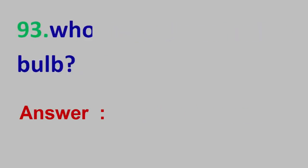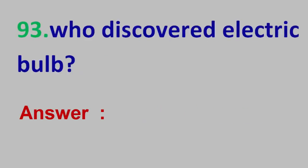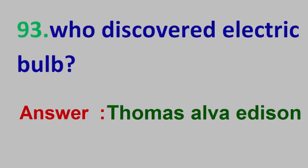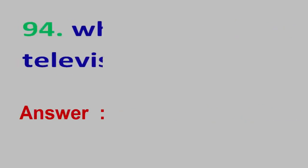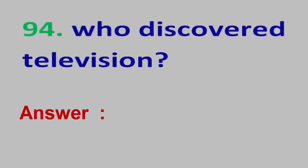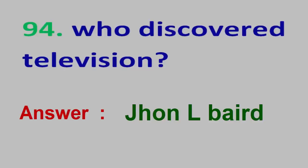Question No. 93: Who discovered the electric bulb? Answer: Thomas Alva Edison. Question No. 94: Who discovered television? Answer: John L. Baird.